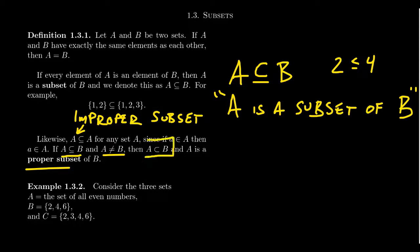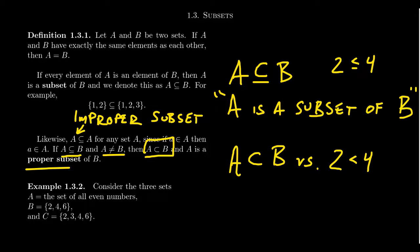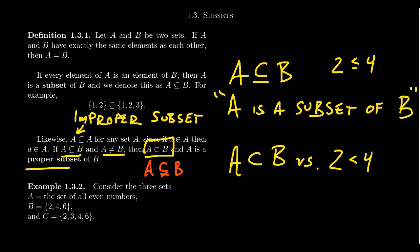Some people denote a proper subset using a symbol like the subset symbol but without the line on the bottom, similar to how 2 is less than 4 drops the equality. But I have to warn you that in the literature, some people use this symbol to mean the same thing as the regular subset symbol — proper or not. So you have to be cautious. In our class, I'll probably just spell it out: A is a subset of B, but A is not equal to B. That's the best way to avoid confusion.